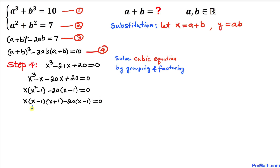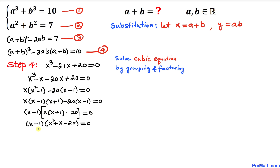We can see that (x−1) is a common factor. Factoring it out gives (x−1)[x(x+1) − 20] = 0, which simplifies to (x−1)(x² + x − 20) = 0. Setting the first factor to zero: x − 1 = 0, so x = 1.